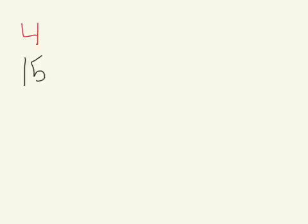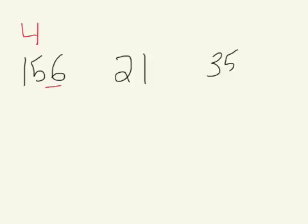Now that we've looked at 2, let's try 4. We'll try the same numbers: 156, 21, and 35. The rule for 4 is a little bit different than 2, but it's a very similar process. In order to check divisibility by 4, we have to look at not just the last digit, but the last 2 digits.